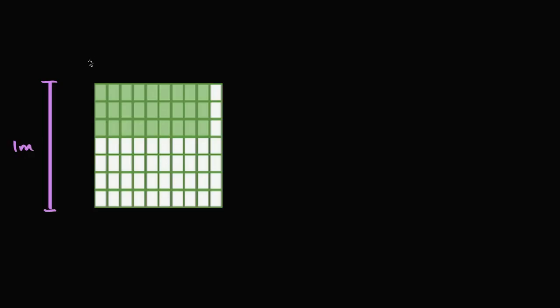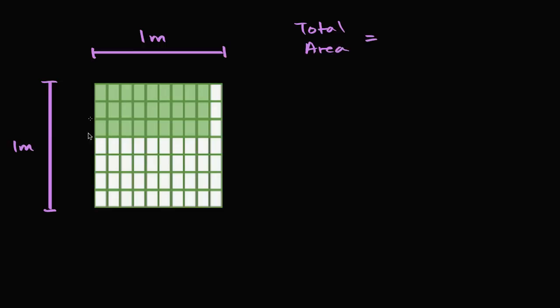So I have a square here. Let's say that its height is one meter — that is one meter. Now let's say its width is also one meter. I'm talking about the dimensions of the entire square, not just the shaded region. So that right over there is also one meter. So what's the area of the entire square going to be? The total area is going to be equal to the height times the width: one meter times one meter. One times one is of course one, and meters times meters — we could write that as a square meter, or meters squared.